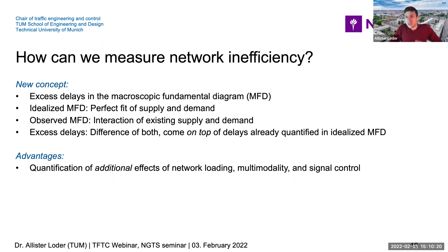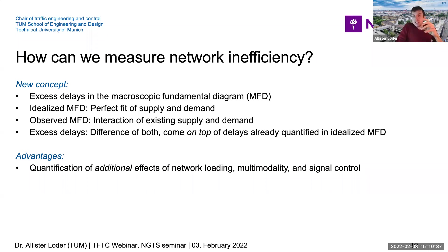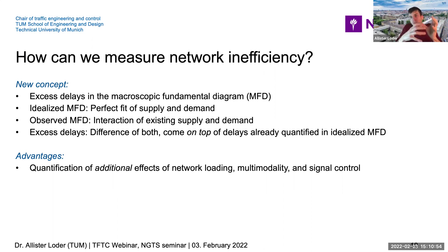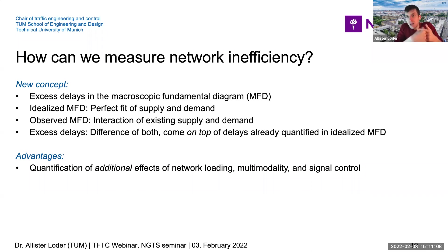To measure and quantify network inefficiency and make it comparable across networks, we use the concept of the MFD. We try to derive its upper bound, which we call the idealized MFD or upper MFD. Then we have the observed MFD, which by definition is always below the upper MFD. The excess delays are simply the difference between the upper MFD and the observed MFD.